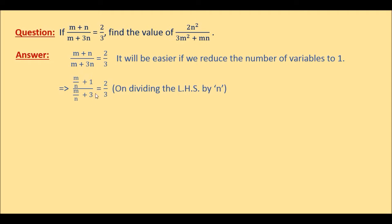By dividing the left hand side — both the numerator and the denominator — by n: m divided by n is m over n, plus n divided by n is 1. So m over n plus 1 becomes our numerator, and the denominator is m divided by n, that is m over n, plus 3n divided by n which is plus 3. So m over n plus 3 becomes our denominator, equal to 2 over 3.